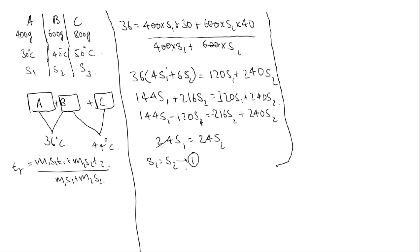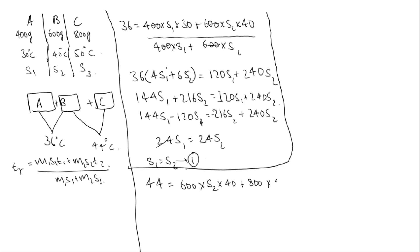Now when liquid B and liquid C are combined, we use the same formula. Resultant temperature is 44 degrees Celsius. M1 is mass of liquid B, that is 600 grams, S2 is specific heat of liquid B, and temperature of liquid B is 40. Plus M2 is mass of liquid C, specific heat S3, into temperature 50. Divided by 600 into S2 plus mass of liquid C into S3.